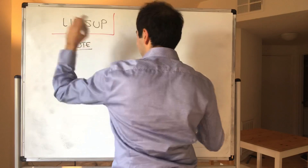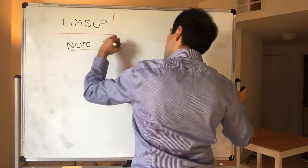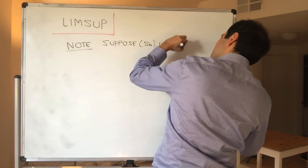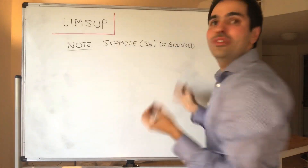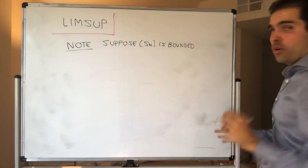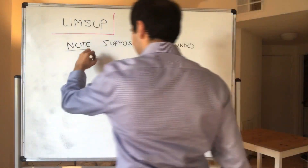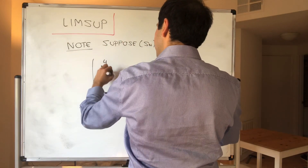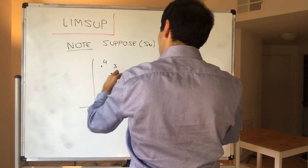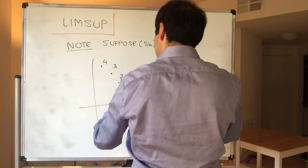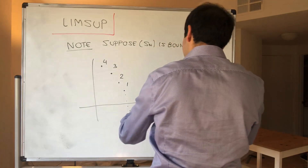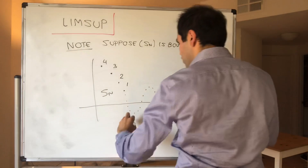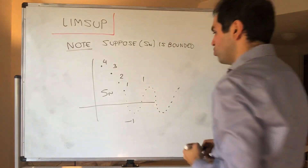Assume that your sequence is bounded. Suppose Sn is bounded. Consider the following sequence: it starts with 4, then goes down to 3, then to 2, and then it just starts oscillating between minus 1 and 1. So this is our sequence Sn, and it just oscillates between minus 1 and 1.